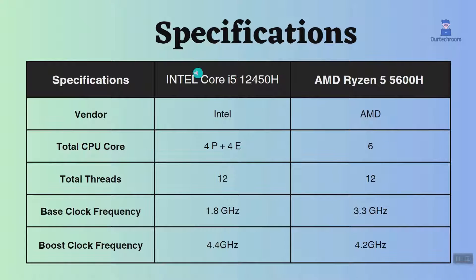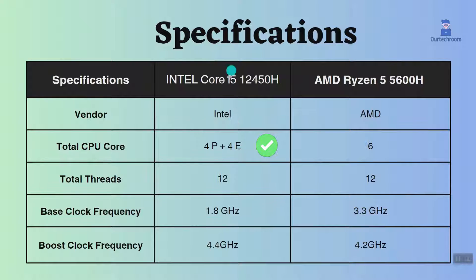The Intel Core i5-12450H has 4 performance cores and 4 efficiency cores, whereas the AMD Ryzen 5 5600H has 6 cores. Performance core and efficiency core processors can offer significant advantages over total core processors. This Intel has more cores and threads than the Ryzen 5 5600H, which results in better performance for multi-threaded applications like rendering and video editing.